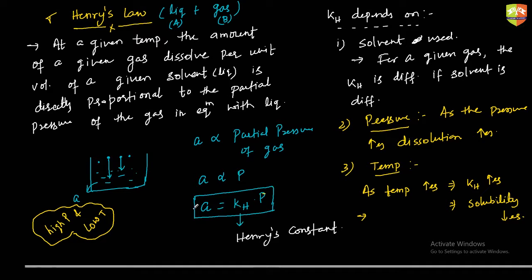The unit of KH: since A is concentration, it is in mol/L, and P is in ATM, so the unit of KH is mole per litre per ATM. It is not gram — it is mole per litre per ATM.